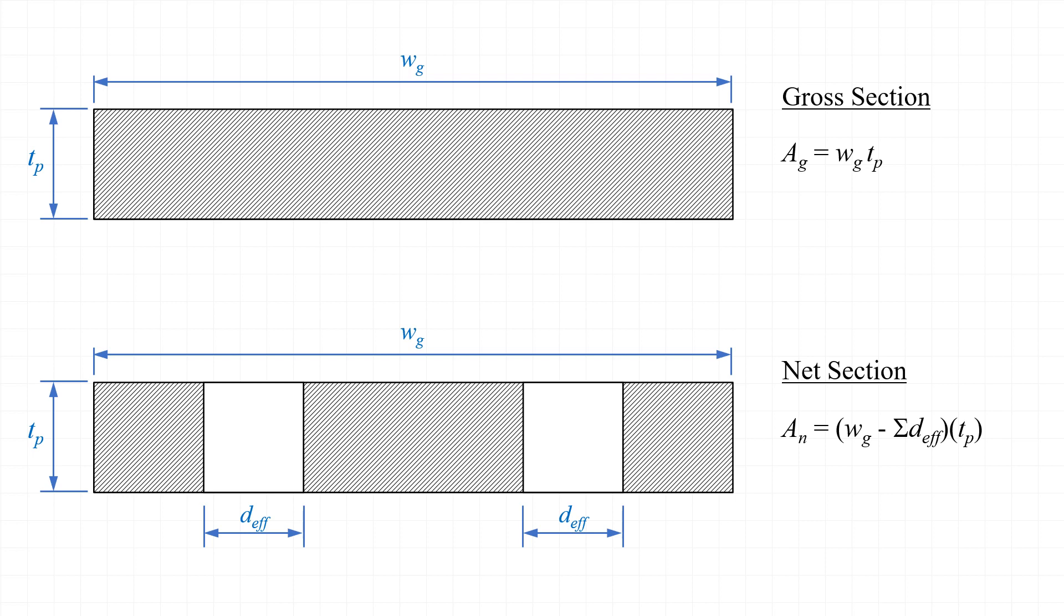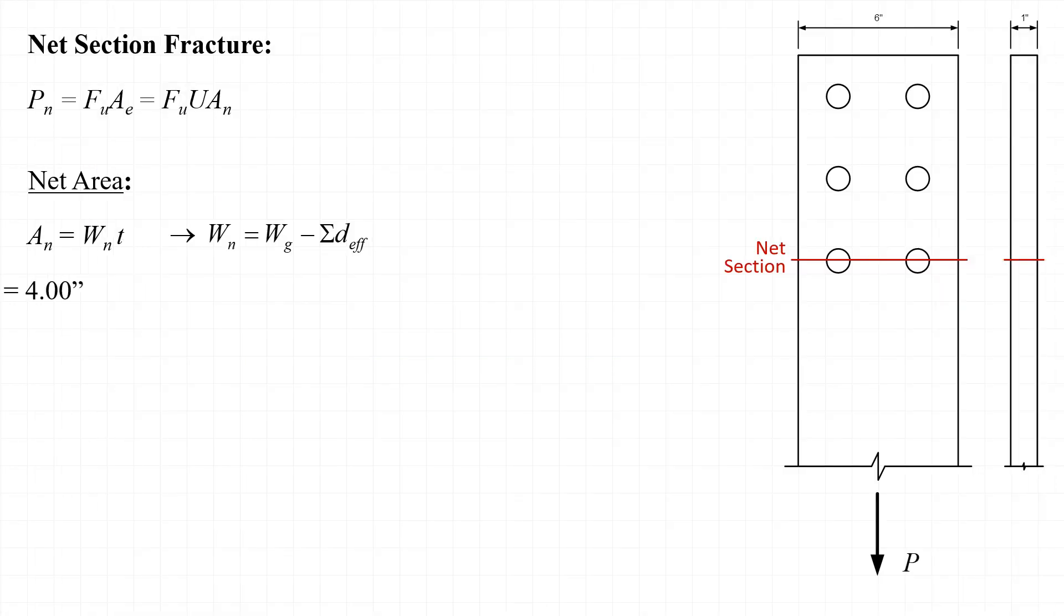Taking a look at that cross section, the net section, the net area A sub n is taken as the gross width minus the sum of the effective diameters of the holes that are made for the bolts, multiplied by the thickness of the plate. When we subtract the effective diameters from the gross width of the plate, we refer to that as the net width of the plate, and so then A sub n is equal to W net times T sub p. When we evaluate the net width for this situation, we take the gross width of six inches and we subtract out the material removed for the fabrication of two bolt holes. The effective diameter for those holes is the diameter of the bolt, seven-eighths in this case,